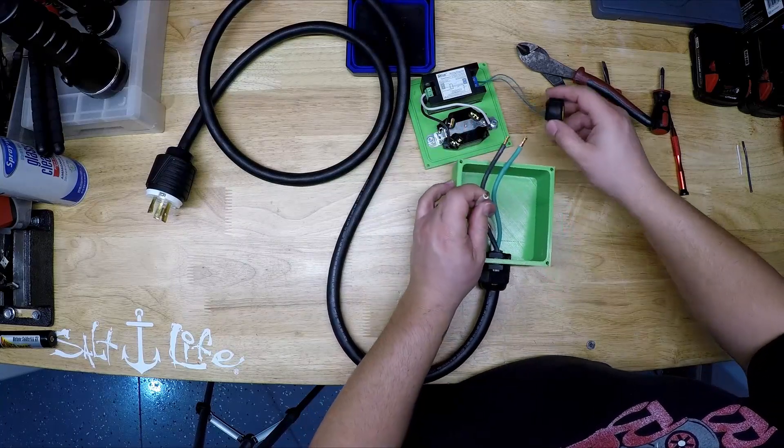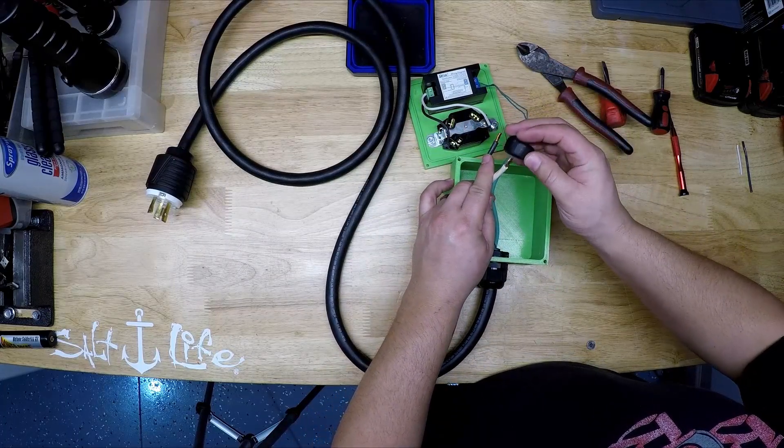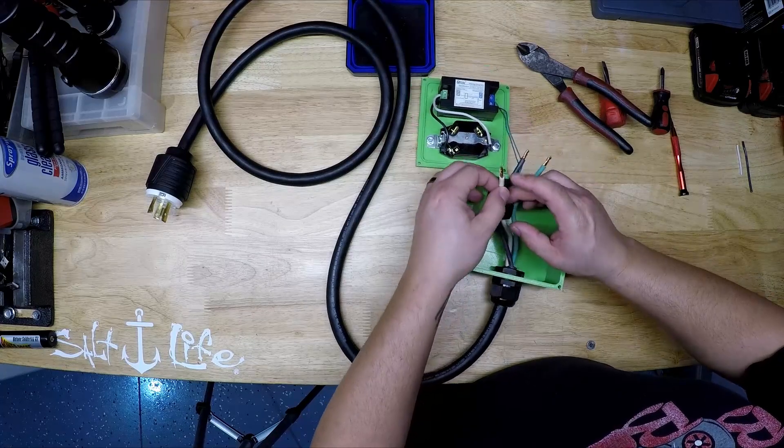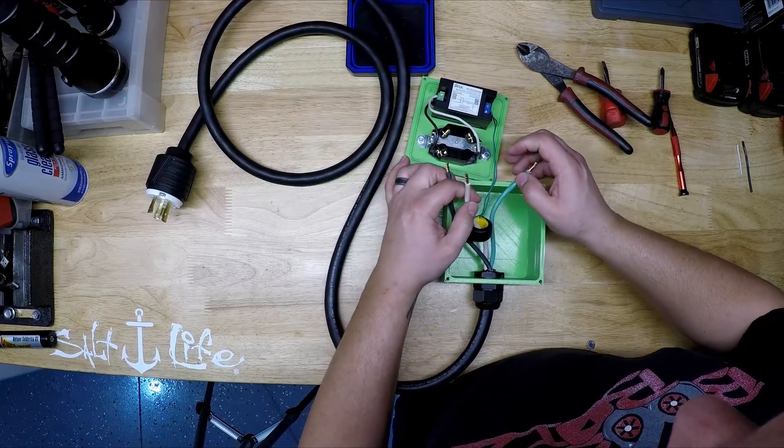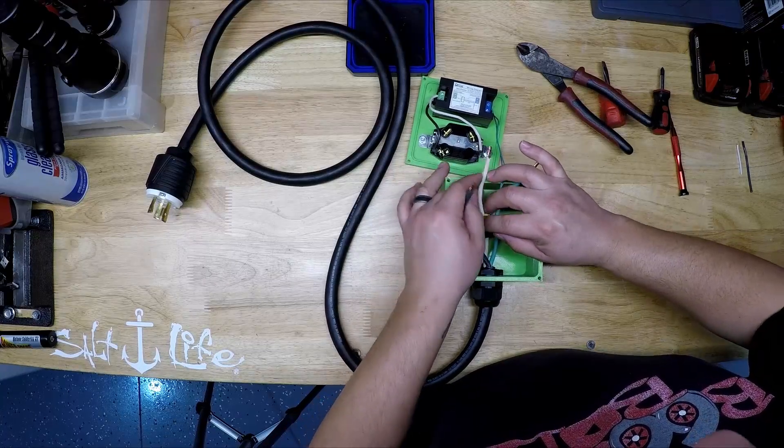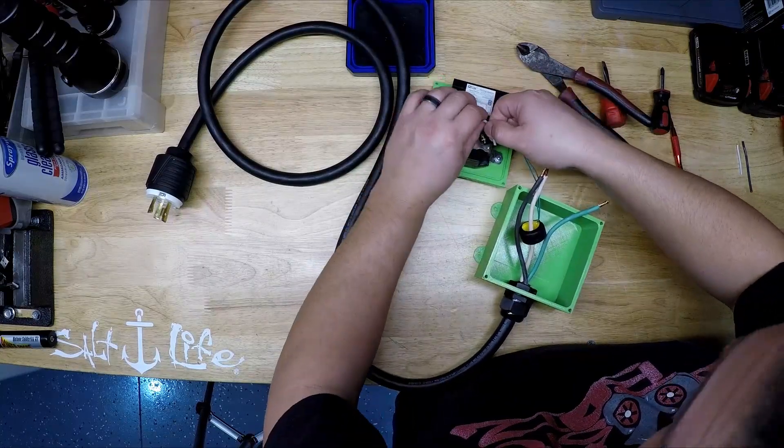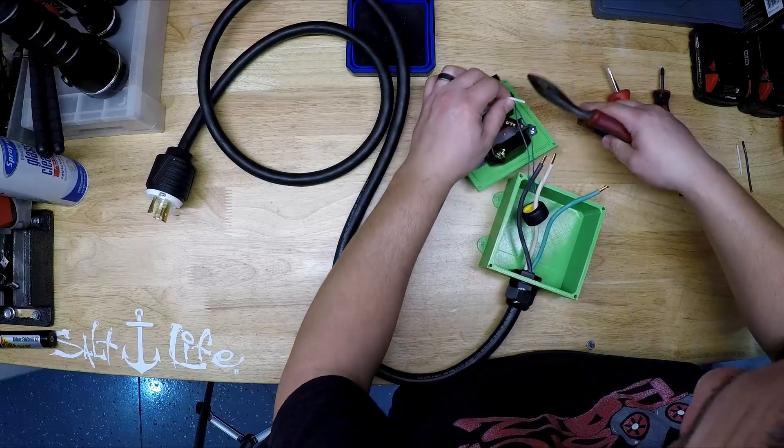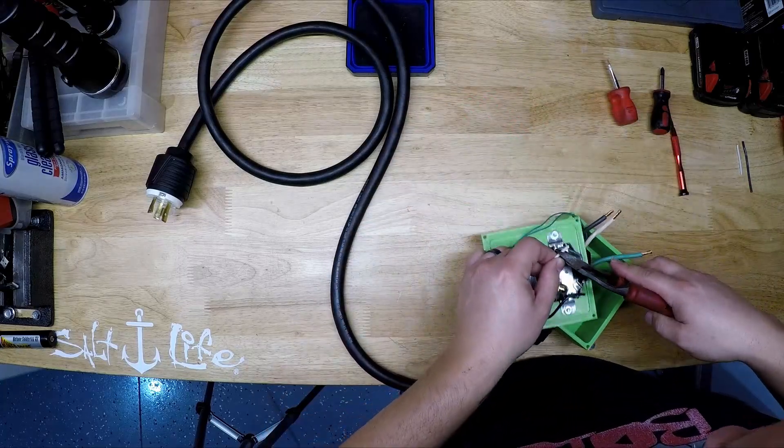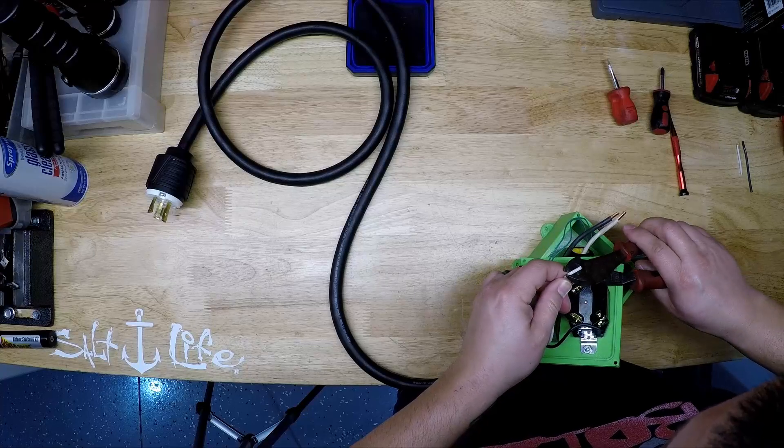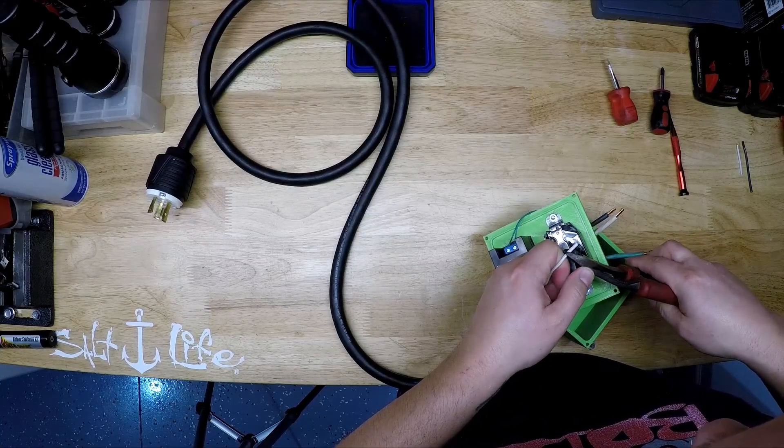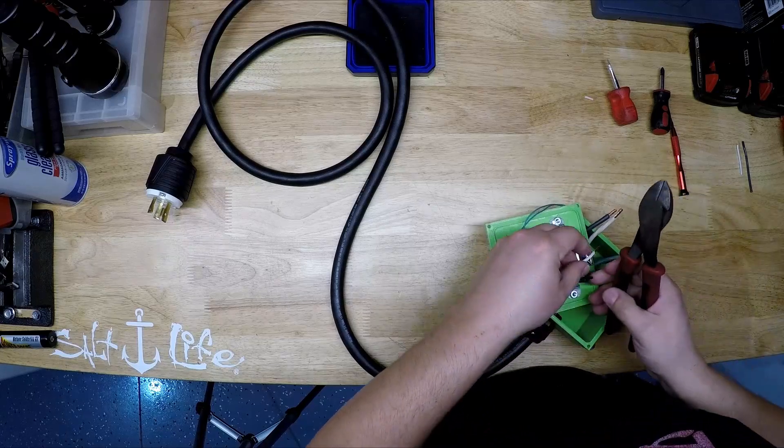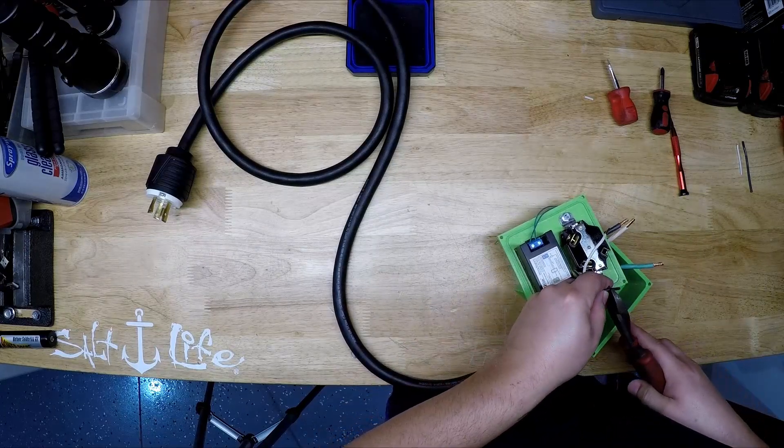So the green is going to be ground. The black is going to be your positive 110. Your other positive 110 is going to be the white. So we're just going to emulate this: white to white, black to black. But this has to go to the side where you're receiving the current on one of them. You don't have to do two of them. Doesn't work that way, just goes on one. So we'll do that. I'm going to strip this back. Strip this one back as well.